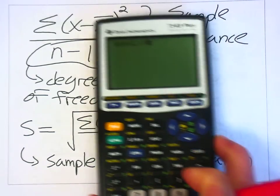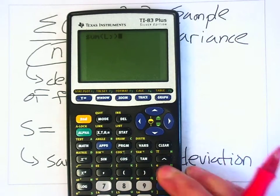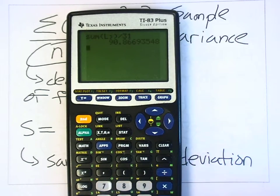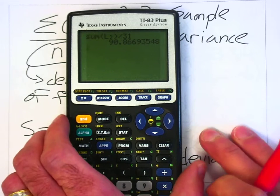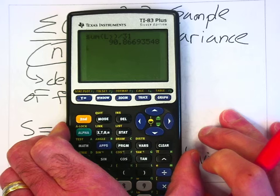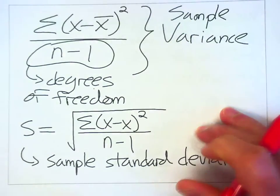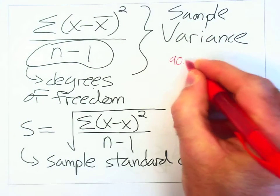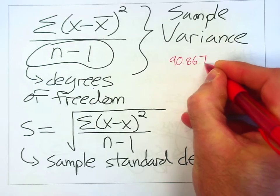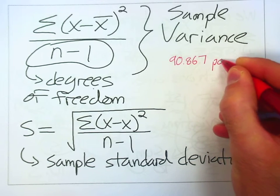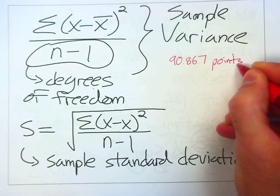That's the degrees of freedom. That's the number of observations that are free to vary. So if I divide by 31, I get 90.867. That is the sample variance. 90.867. But the units are squared points.